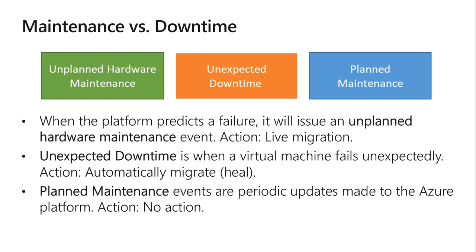Planned maintenance is handled by Azure — you don't have to worry too much, though it can sometimes cause a reboot and may affect your business very slightly. For unplanned hardware maintenance, this occurs when the Azure platform predicts that hardware or a platform component associated with a physical machine is about to fail. Azure then issues an unplanned hardware maintenance event and uses live migration technology to migrate the virtual machine from the failing hardware to a healthy physical machine. Live migration is a VM preservation operation that only pauses the virtual machine for a short time, though performance might be reduced before or after the event.